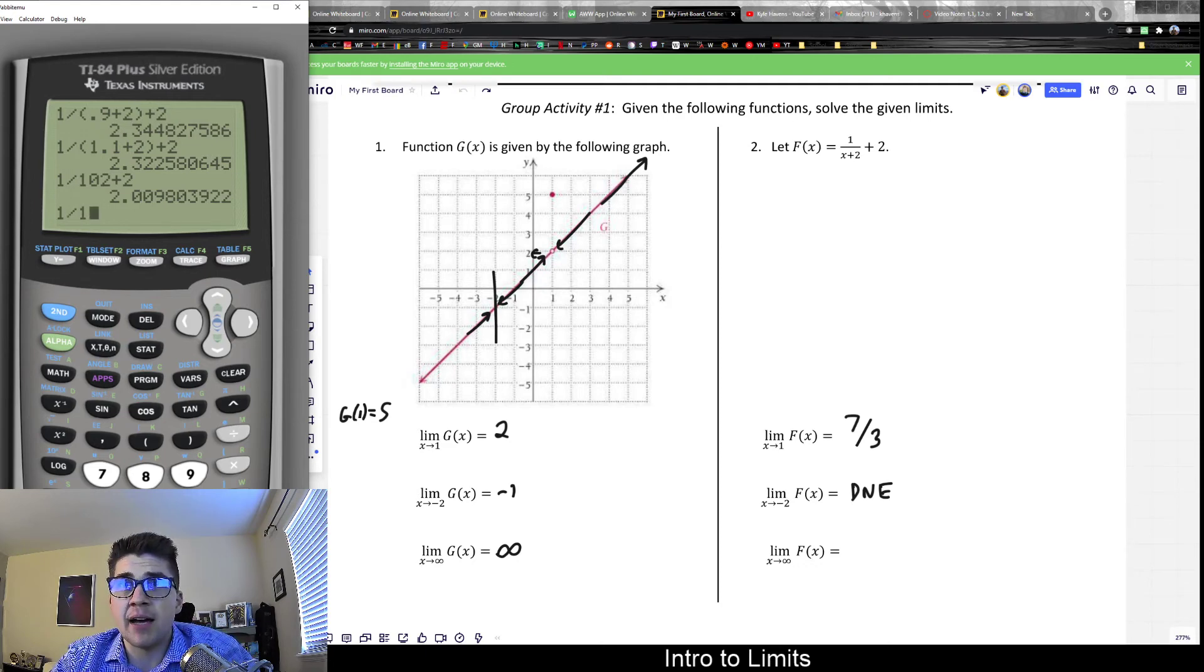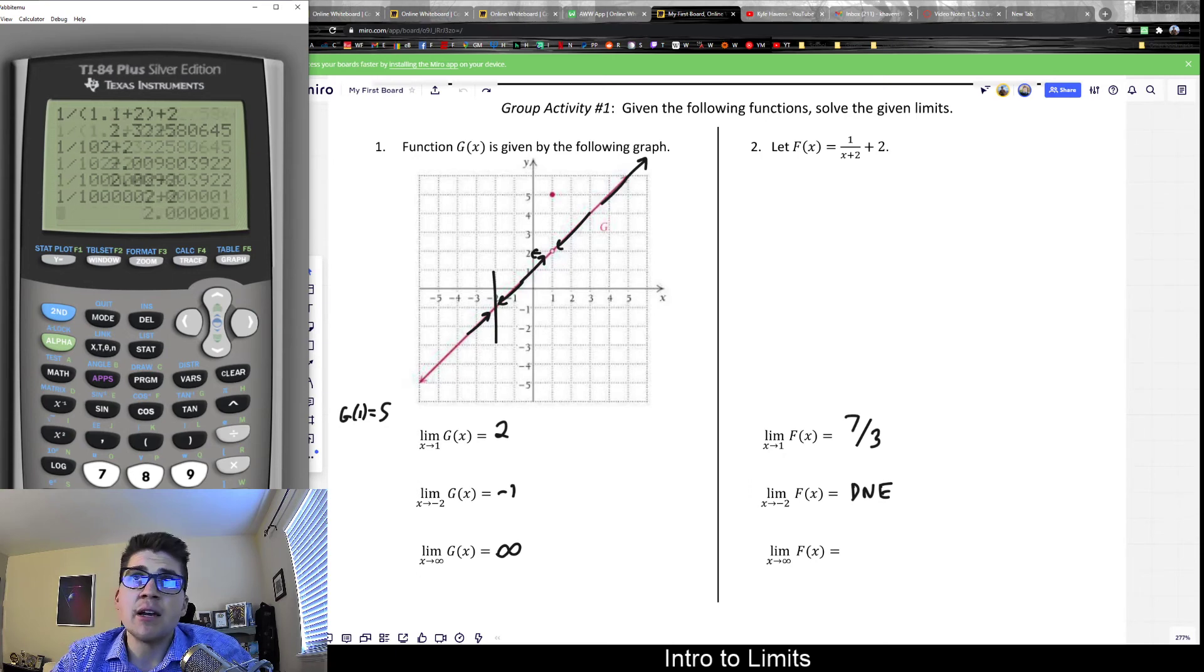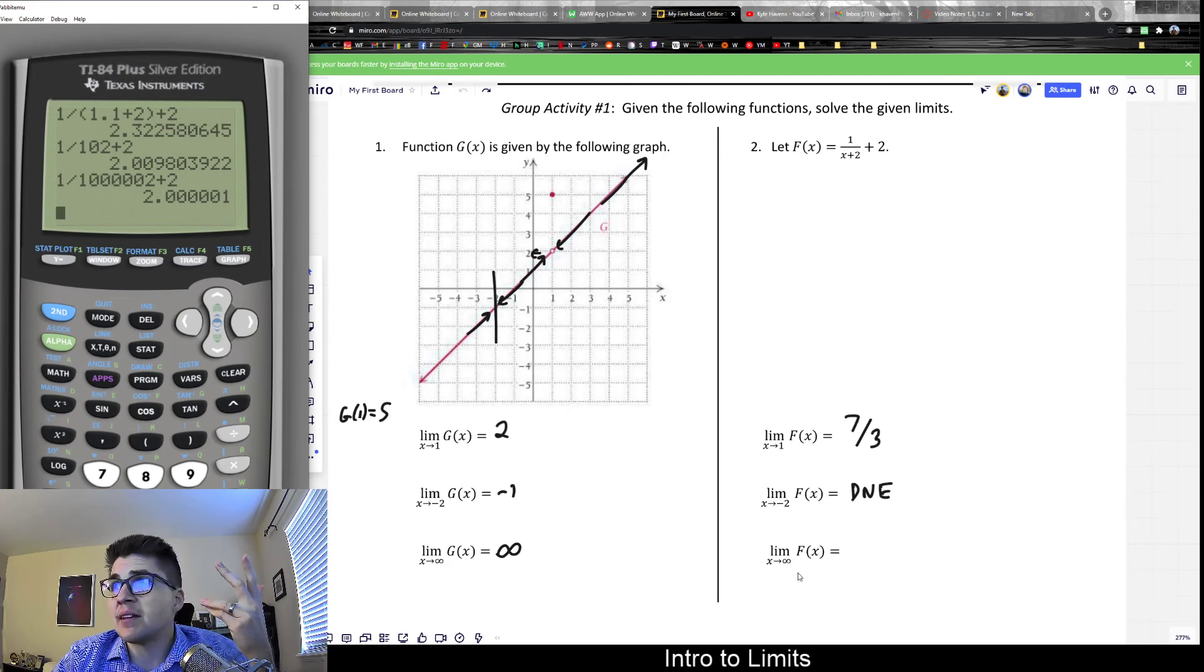Even if, say, I plug in a million, that would be 1 divided by a million in 2 plus 2. Well, that's essentially going to be almost 0 plus 2. It's going to be basically 2. In summarizing, as I go towards infinity, essentially as I plug in larger and larger numbers, this is trending towards 2. And that's that.